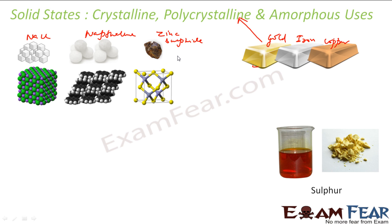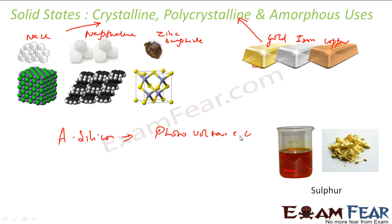Zinc sulfide is used in cathode ray tubes. Amorphous silicon is used for photovoltaic cells, while crystalline silicon is used in semiconductors. We will discuss these crystal structures — sodium chloride, zinc sulfide, and silicon — in detail in the upcoming slides.